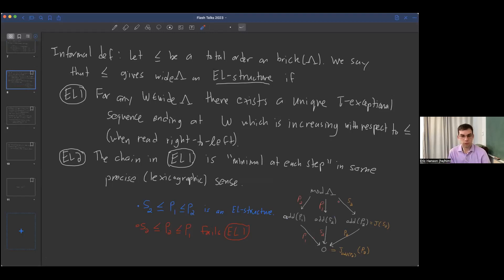An informal definition, just so I can state the main result: we're going to take a total order on the set of bricks of mod lambda, and we're going to call this total order an EL structure on this poset wide of lambda if a couple properties hold. First, for any wide subcategory W, we need there to be a unique tau exceptional sequence which ends at W and is increasing with respect to this partial order. By increasing, I mean when we read right to left. In the example, here's the partial order I took: S2 less than P1 less than P2. So S2, then P2 is a tau exceptional sequence that's increasing, because we start at S2 and then go to P2.